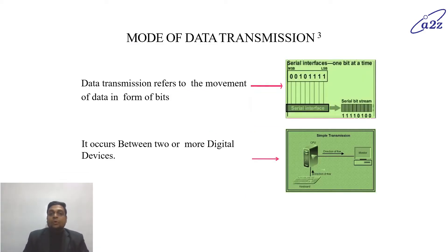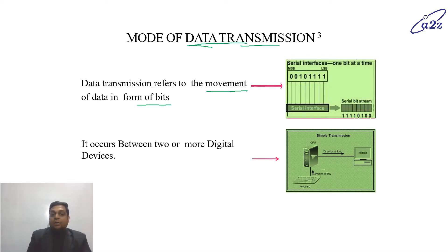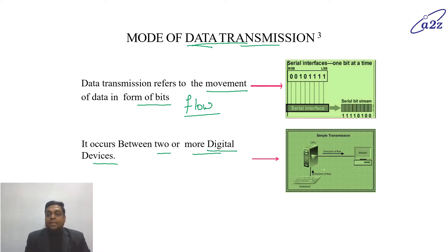First of all, mode of data transmission. Data transmission means the flow of data, movement of data in the form of bits. Data transmission means the movement or flow of data, and it occurs between two or more digital devices. A digital device is a device which communicates in digital form — which processes digital numbers, communicates in digital numbers, and produces output in the form of digital numbers. All those devices are known as digital devices.